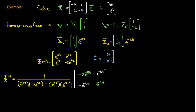Let's use the 2×2 inverse formula to calculate Phi inverse. We take 1 over the determinant — computed as the product of the diagonals minus the product of the off-diagonals — then from Phi we swap the diagonal entries, so −2e^(−5t) is now in the first row first column and e^(−2t) is in the second row second column, and change the sign on the off-diagonal terms. We can then multiply out and simplify the determinant.